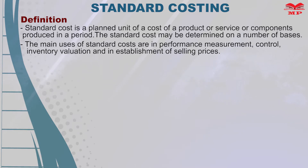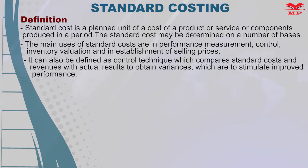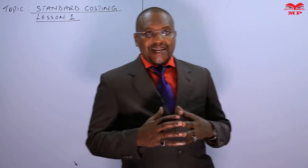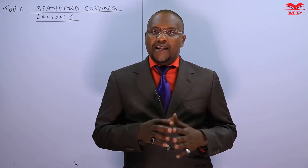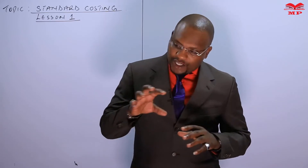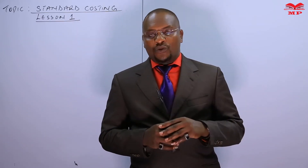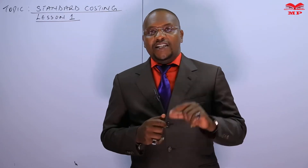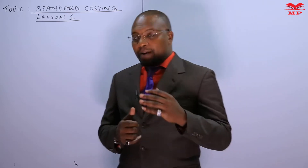Standard cost can also be defined as a control technique which compares standard costs and revenues with actual results to obtain variances, which are used to stimulate improved performance. Standard costing is a control technique that uses standard cost and revenues as a yardstick for measuring actual performance. It is the practice of comparing what was budgeted or planned with what has actually been achieved.